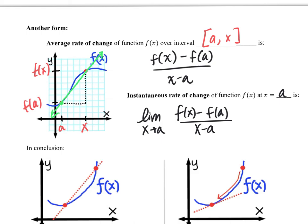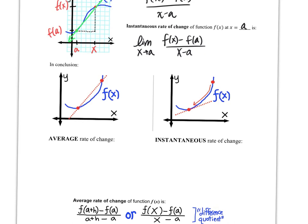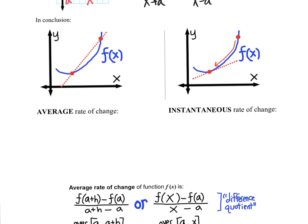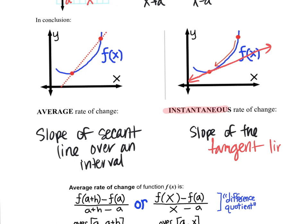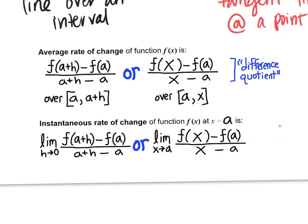The average rate of change is just the slope of the secant line, over an interval — from one point to another. That's what we did all the way back in algebra. The instantaneous rate of change — how fast is 2D rising at three seconds? That is going to be the slope of the tangent line, at a point — not over an interval. I want to know how fast is 2D falling at seven seconds. We've written it a hundred times. Let's move on.